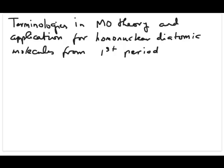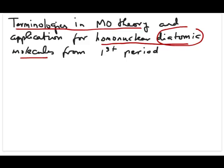In this video, we're going to discuss some of the terminologies that are important in molecular orbital theory. We're going to apply these terminologies to examples using homonuclear diatomic molecules — molecules with two atoms of the same nuclei. The molecules we'll talk about are from the first period, so you're going to see examples using H2, He2, H2+, and so on.